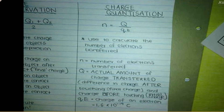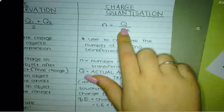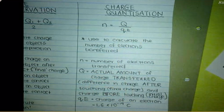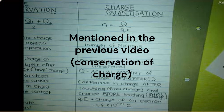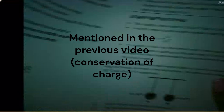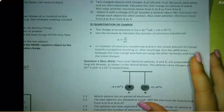This is charge quantization, or the quantization of charge. The formula is N equals Q divided by QE. Every single charge in the universe, every single thing that has a charge, that charge is either equal to 1.6 times 10 to the negative 19, or it is a whole number multiple of this.